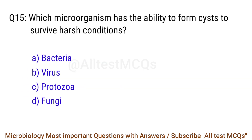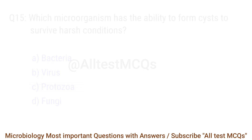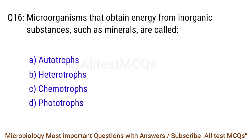Q15. Which microorganism has the ability to form cysts to survive harsh conditions? The right answer is option C: Protozoa. Q16. Microorganisms that obtain energy from inorganic substances such as minerals are called? The right answer is option C: Chemotrophs.